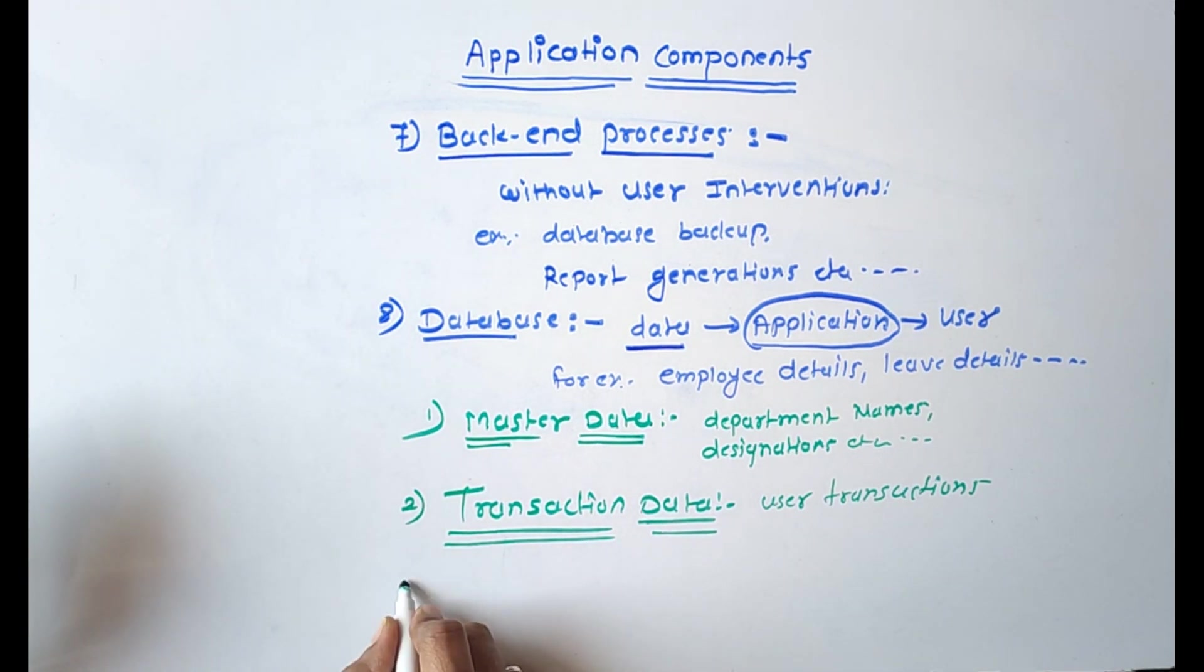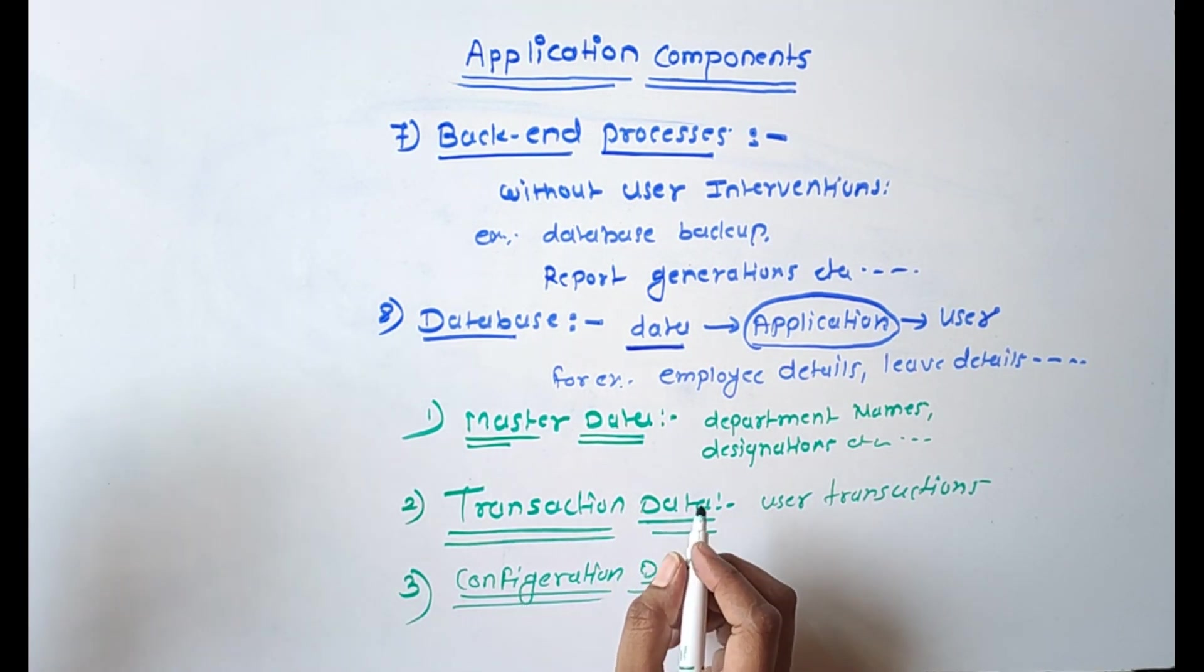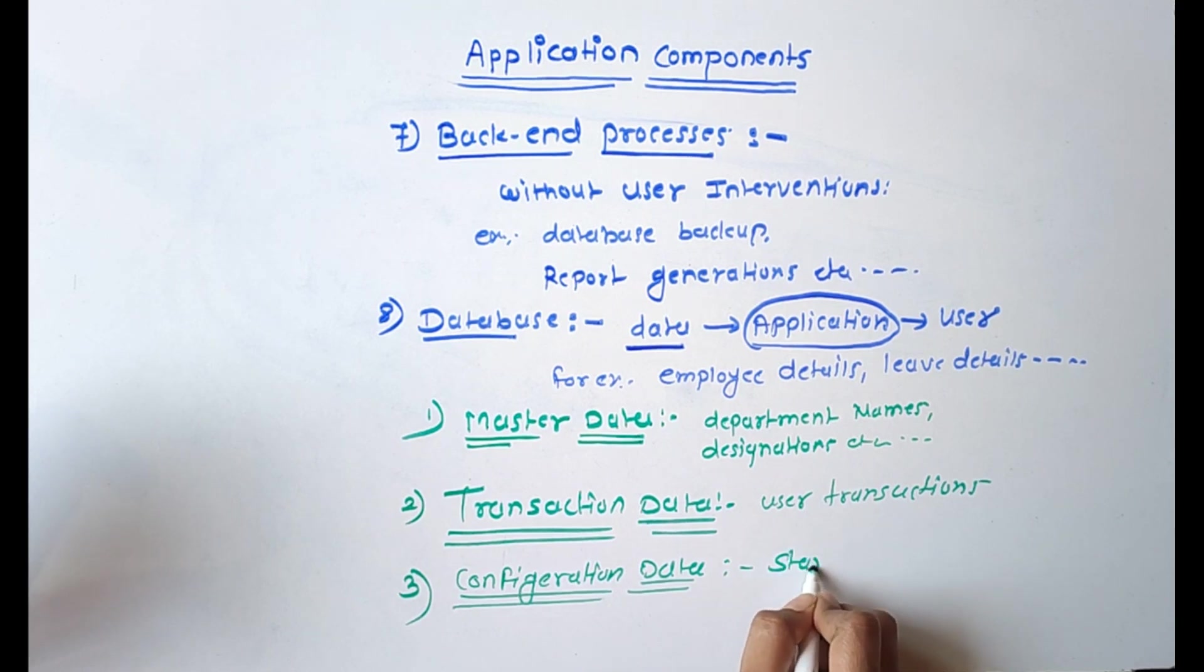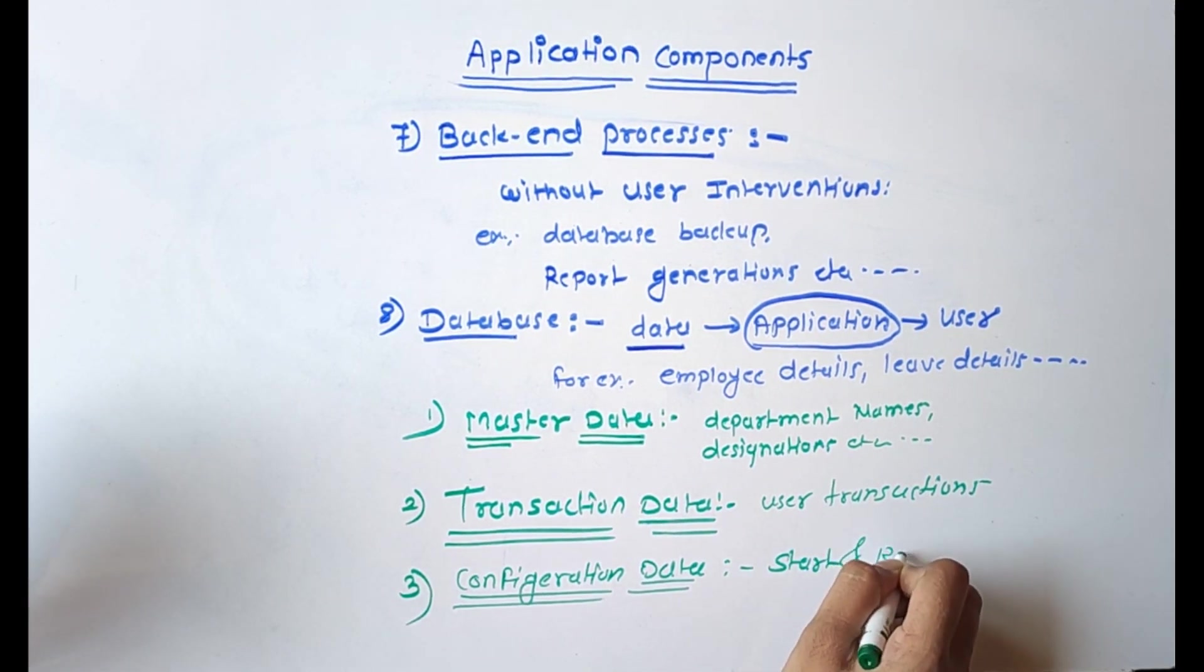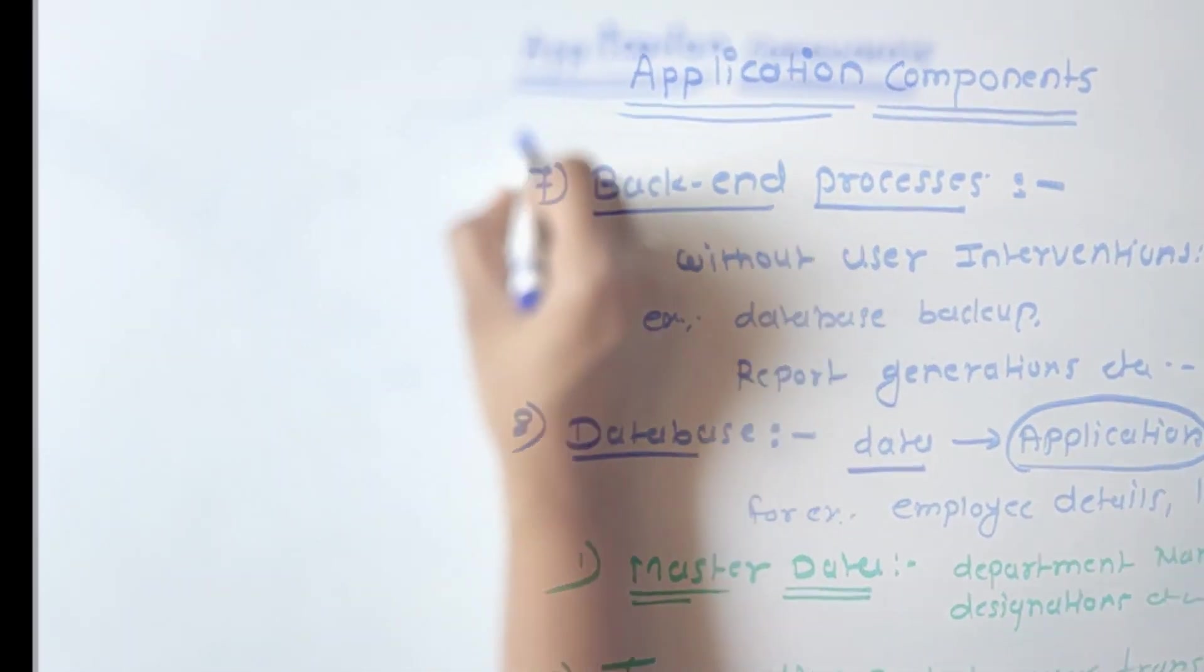Then third one is configuration data, needed by the application to start and run. For example, printer to be used first implement data before machine starts.